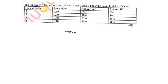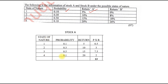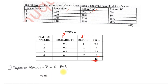The very first question was: the following is the information of Stock A and B under the possible states of nature, and they asked us to find the standard deviation and expected return. We start first with Stock A, taking return of A and probability data together. The columns are: state of nature, probability, return, and P×R. When you multiply probability P by return R and total that up, you get the expected return. So 0.1×5, 0.3×10, 0.5×15, 0.1×20 — the expected return R̄ = ΣP×R = 13%.